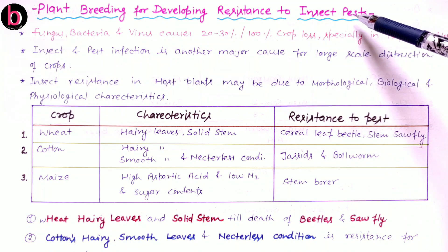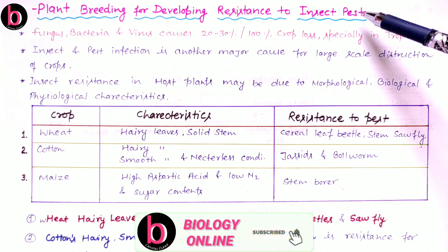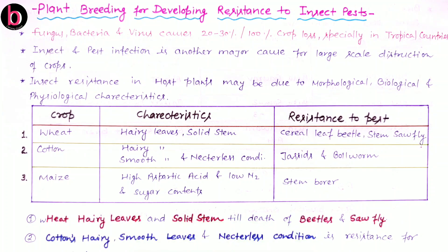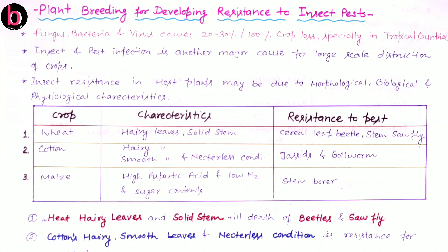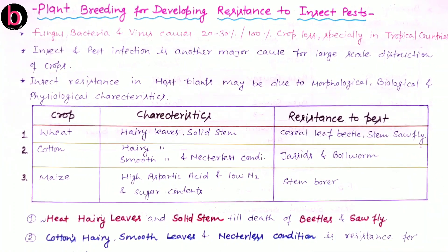Here we are discussing only about insect pests. Pests are all creatures that cause damage to crops. Along with insects, there may be a number of mites, nematodes, molluscs, etc. But here we are discussing only insect pest resistance.